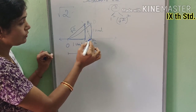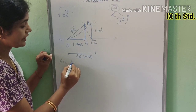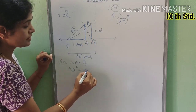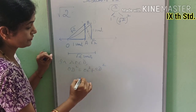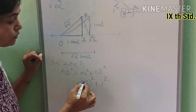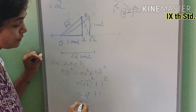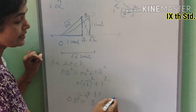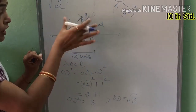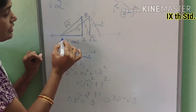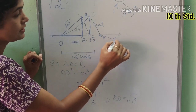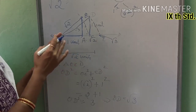Using the compass with radius OD, we mark point P on the number line, and point P represents root 3. So the key idea is: first we split 3 as 1² + (√2)², represented root 2, then drew a 1 unit perpendicular and joined to O. This distance OD is root 3.